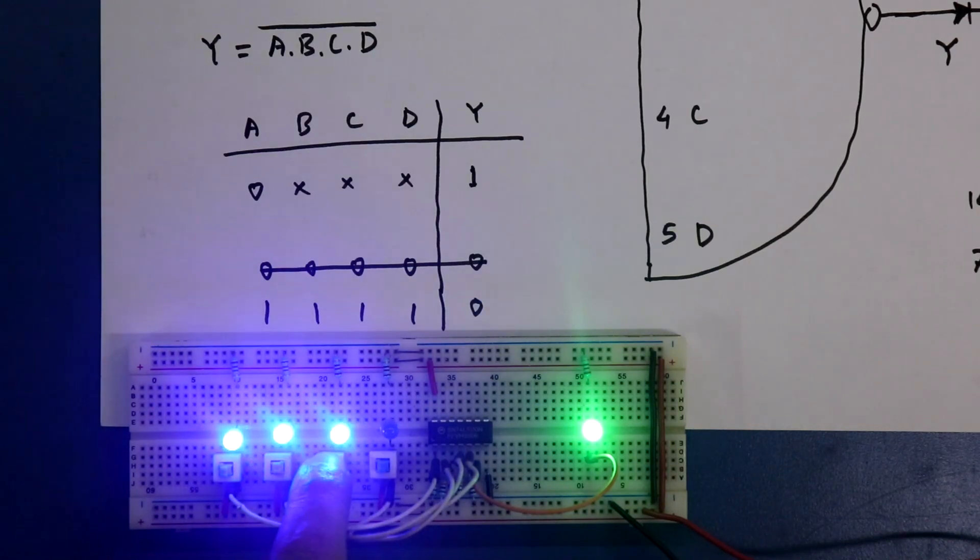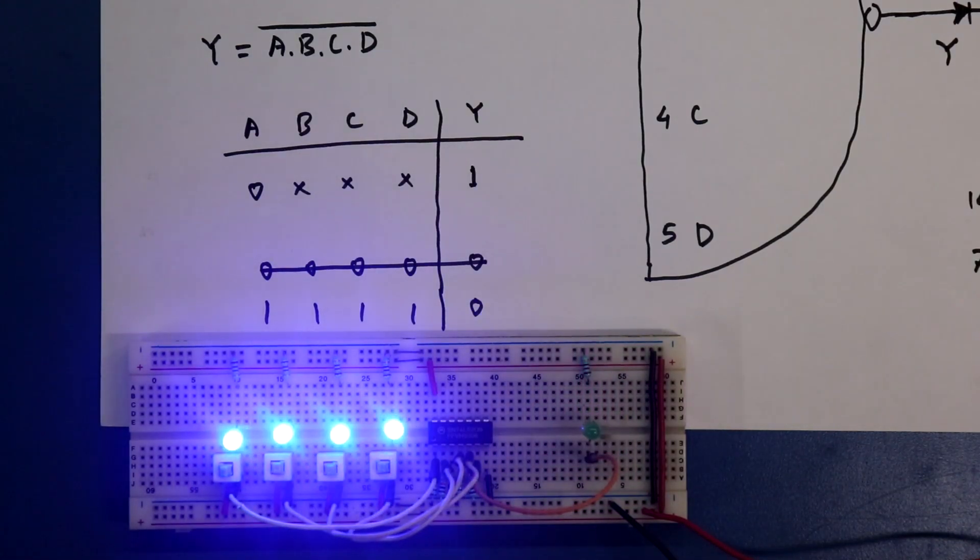So it is 1, 1, 1 and now it is 0. In this video we are going to see this connection. So let's get started.